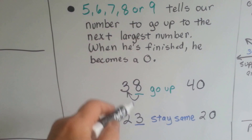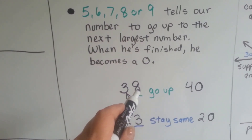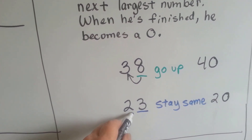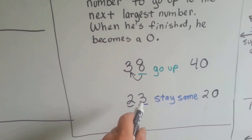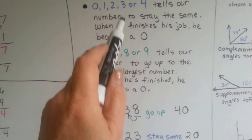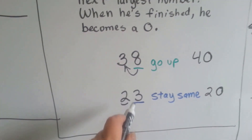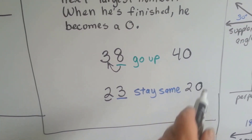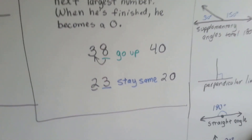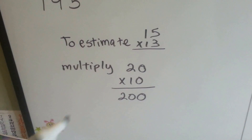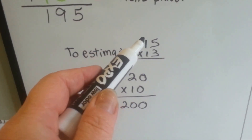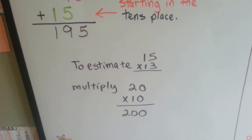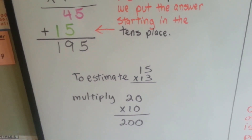The 8 says to the 3, come on, go up. So 3 becomes a 4, and when 8 is finished with his job, he becomes a 0. For 23, if we're rounding this place value, we use the 3 to tell us what to do. 3 tells our number to stay the same, so 3 says hey 2, stay the same. And 2 stays the same, and when 3 is finished with his job, he becomes a 0. The 3 tells the 1 to stay the same — so that's a 10. 20 times 10 is 200. That's pretty close to 195, isn't it? That was a good estimate.